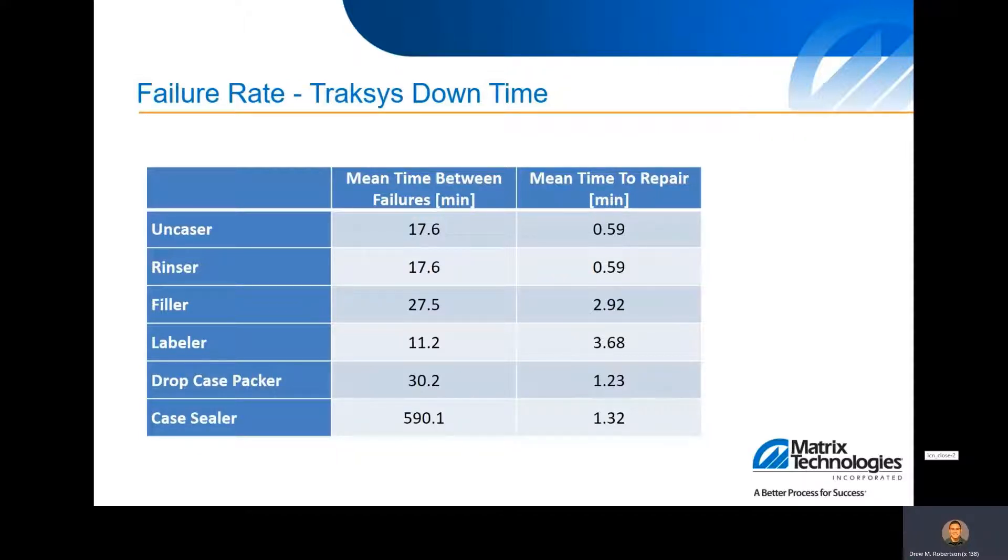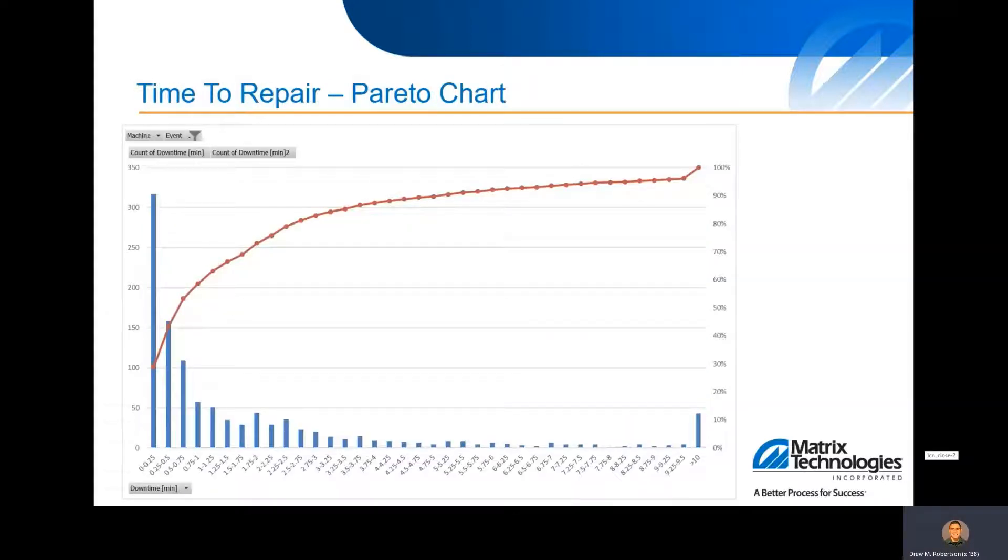For this line, we also had TRACSIS data to calculate downtime events, the mean time between failures, mean time to repair. These are very important as we go to build our model. We want to know how each piece of equipment is functioning and how often it's running into an issue.